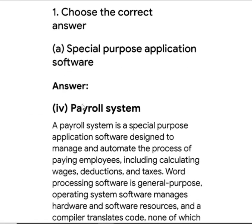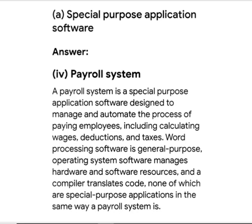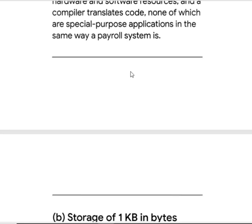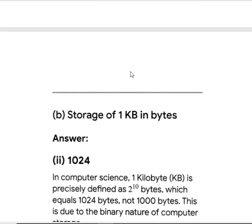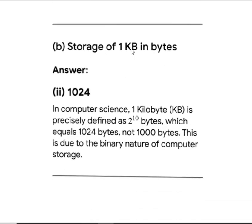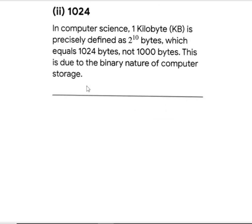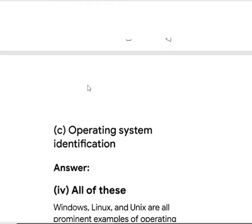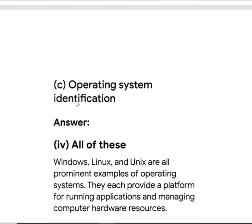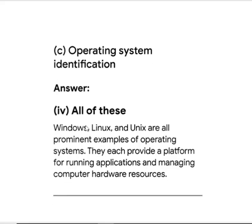For the correct answer section: question A — answer is Roman numeral 4. Question B — 1 KB equals 1024 bytes, so the answer is 1024. For operating system identification, ROM 4 is the answer.